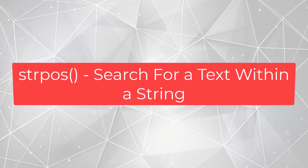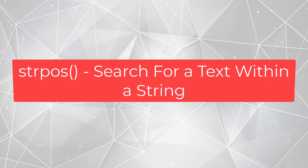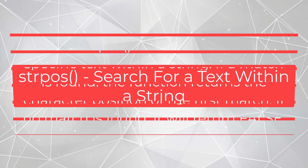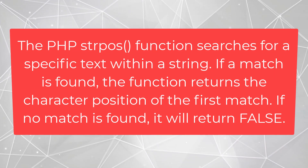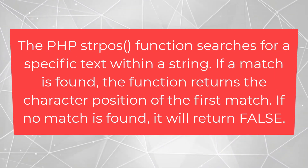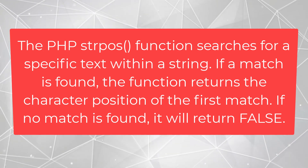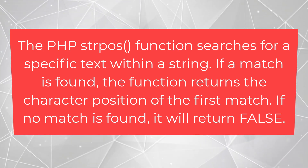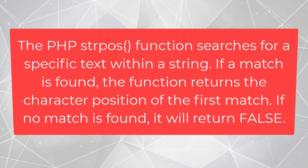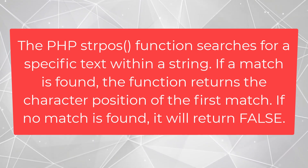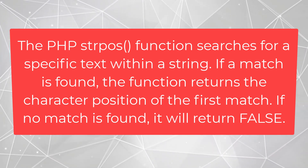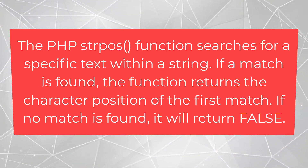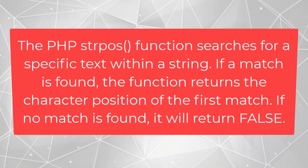Search for a text within a string. The PHP strpos function searches for a specific text within a string. If a match is found, the function returns the character position of the first match. If no match is found, it will return false.